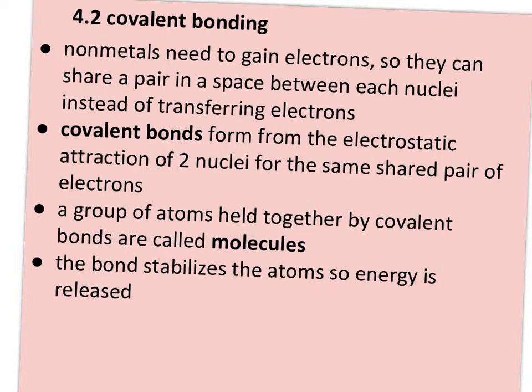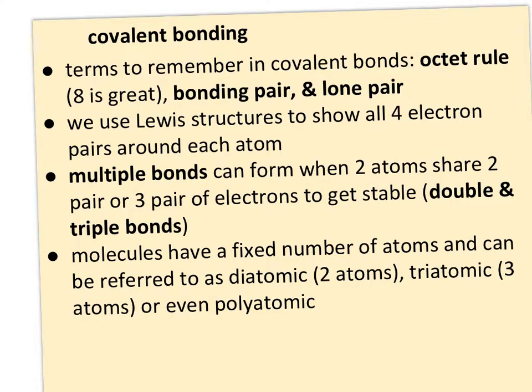The bond stabilizes the atoms, so energy is released as covalent bonds form. Some terms to keep in mind: first, the octet rule — I like to describe it as 'eight is great,' although two will do for the small elements one through five. Every element is looking to have an octet of two in the s orbitals and six in the p orbitals, for eight valence electrons.